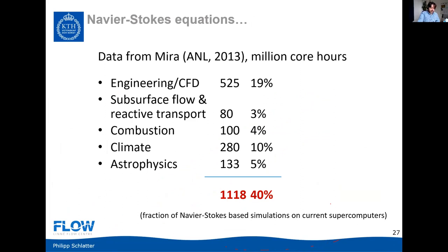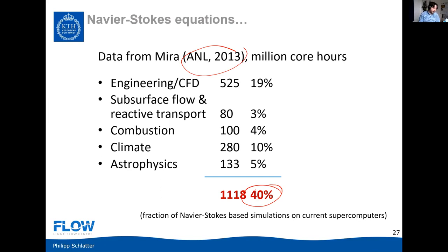Around 40% of the time in large computer centers is used to solve the Navier-Stokes equations — not only using codes like NEC 5000, but also climate codes and astrophysics codes. Still, it's quite a large fraction used for fluid dynamics related problems. That's important to keep in mind when talking about CFD and the corresponding codes.